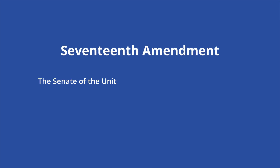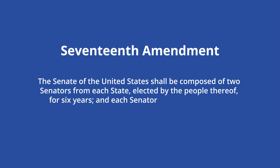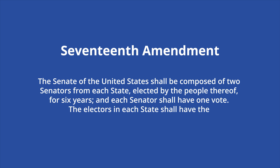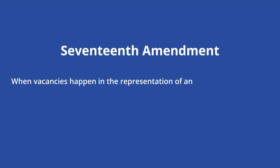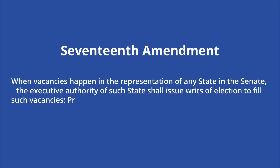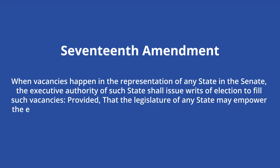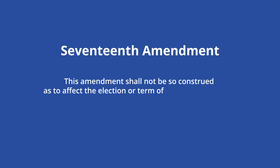The Senate of the United States shall be composed of two Senators from each state, elected by the people thereof, for six years, and each Senator shall have one vote. The electors in each state shall have the qualifications requisite for electors of the most numerous branch of the state legislators. When vacancies happen in the representation of any state in the Senate, the executive authority of such state shall issue writs of election to fill such vacancies, provided that the legislators of any state may empower the executive thereof to make temporary appointments until the people fill the vacancies by election as the legislator may direct. This amendment shall not be construed as to affect the election or term of any Senator chosen before it becomes valid as part of the Constitution.